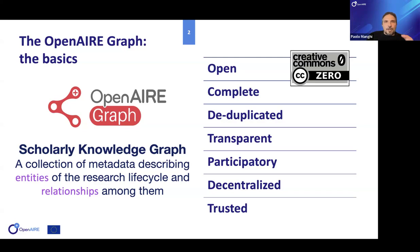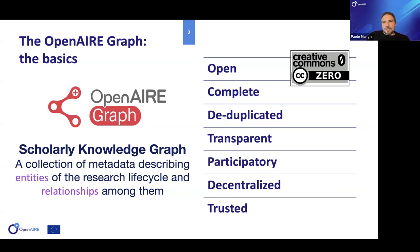It's also about the relationships between such entities — knowing which publication is linked to data, or which data has been produced by which service, and so on. The OpenAIRE Graph is trying to do this at the global level, making all metadata open under CC0. We aim to be complete, collecting from all sources trusted by scientists: institutional repositories, libraries, publishers, data archives, and software archives.